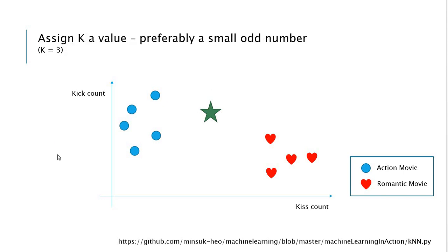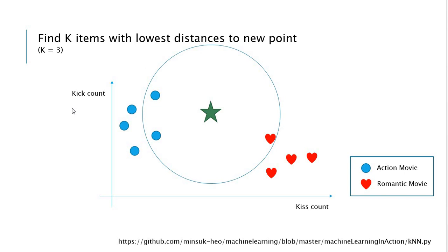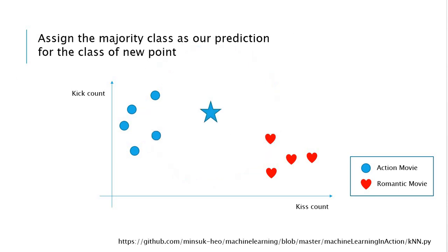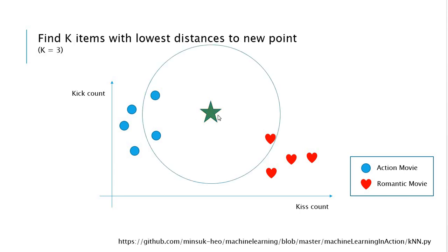First, we need a K value, and the K value is preferably a small odd number. We are going to use K as 3 in this example. As you can see, at the lowest distance we have two action movies and one romantic movie. So the majority class here is action, because we have two action movies in this circle and one romantic.